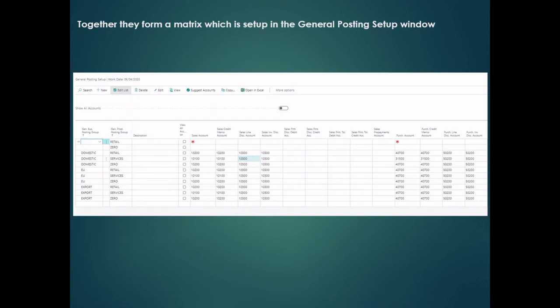Now we're in the general posting setup window and this is where the GL codes are added. The general business posting group and the general product posting group form a matrix. So if a customer is assigned a general business posting group of 'Domestic' and you sell them an item assigned a general product posting group of 'Retail', then the sales account that's going to be used is 10200. Likewise, if a vendor is set up with 'Domestic' and you buy that item with product posting group 'Retail', it's going to use the purchases account of 40700. The beauty of this setup is I can sell that exact same item to a customer with a general business posting group of, say, 'EU' and that could theoretically use a different sales code. This is really the hub of how Business Central chooses which sales codes to use.